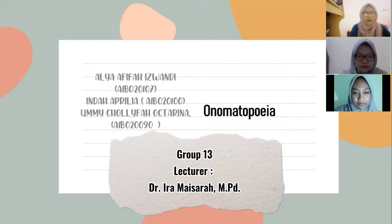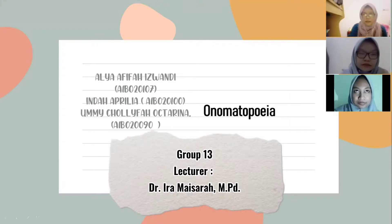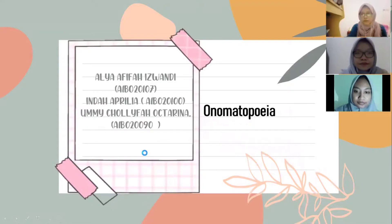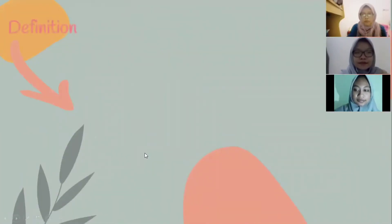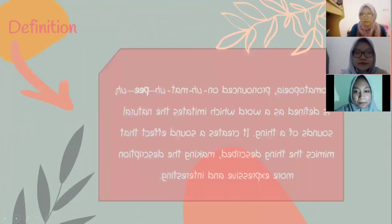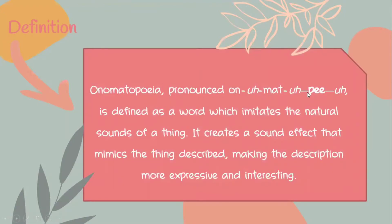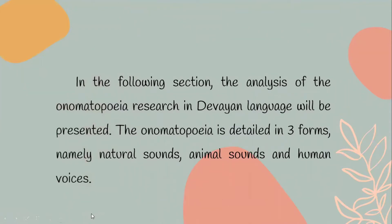Now let's get started. Our topic is onomatopoeia. Have you ever heard about onomatopoeia? Onomatopoeia, pronounced 'onomatopoeia,' is defined as a word which imitates the natural sounds of a thing. It creates a sound effect that mimics the thing described, making the description more expressive and interesting. Onomatopoeia is detailed in three forms: natural sounds, animal sounds, and human voices.